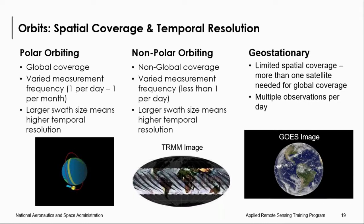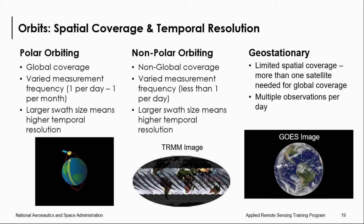Each type of orbit has varying spatial coverage and temporal resolution. Polar orbiting satellites have global coverage, and measurements can vary from once a month to once a day — a high temporal coverage. Non-polar orbiting satellites have non-global coverage with varied temporal frequency, often less than once per day. Geostationary satellites have limited spatial coverage, so more than one satellite is needed for total global coverage, as seen from the GOES image. These are typically used in weather and meteorological applications, but they provide many observations per day — a very high temporal resolution.